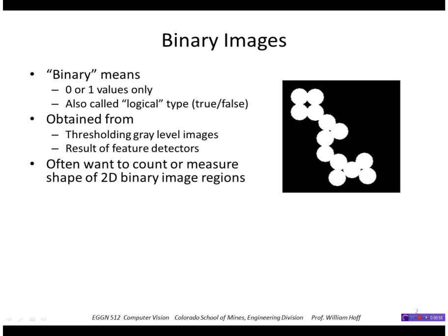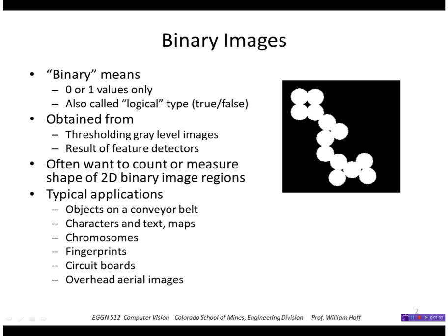We often want to count or measure the shape of these two-dimensional binary image regions and that's what we're going to focus on today. You can also get binary images naturally from applications such as looking at objects on a conveyor belt. You might have a light object against a dark background or processing images of text with characters, fingerprints, etc.